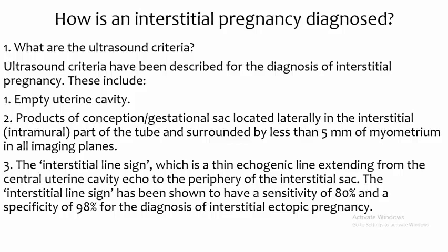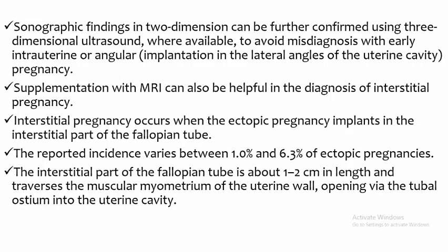The interstitial line sign is a thin echogenic line extending from the central uterine cavity to the periphery of the interstitial sac. This sign has been shown to have a sensitivity of 80% and a specificity of 98% for the diagnosis of interstitial ectopic pregnancy. Sonographic findings in two dimensions can be further confirmed using three-dimensional ultrasound, where available, to avoid misdiagnosis with early interstitial or angular implantation in the lateral angles of the uterine cavity.